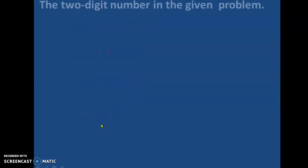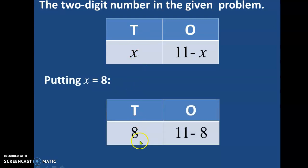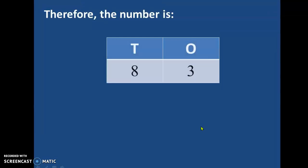So the two-digit number in the given problem is found by putting the value of X which is 8. We get 8 in the 10's place and 11 minus 8 equals 3 in the 1's place. Therefore the number is 83.